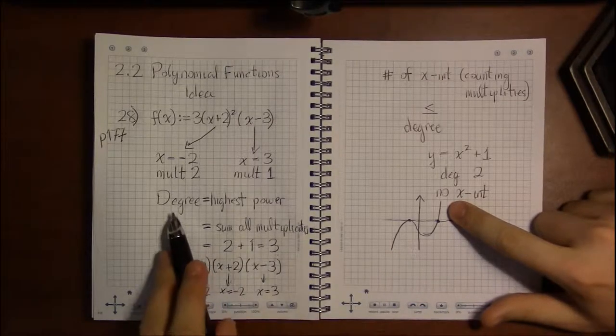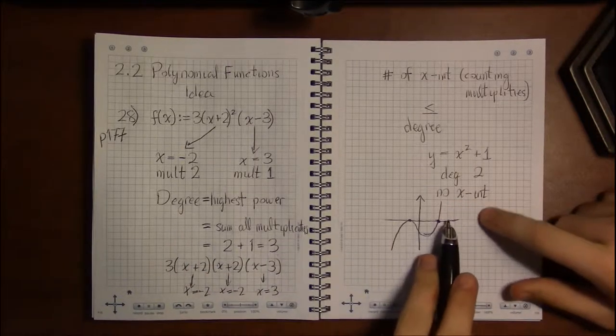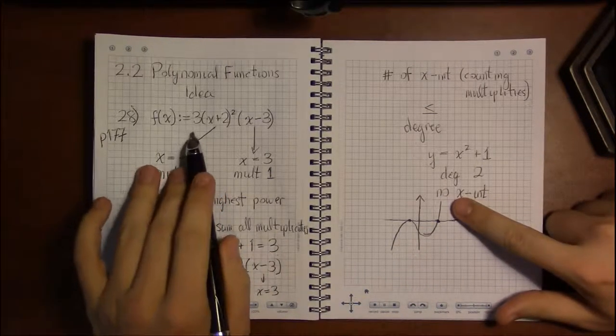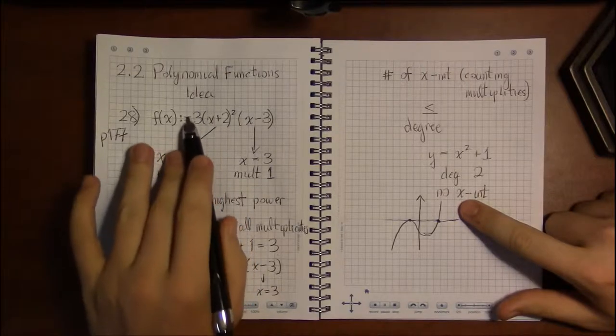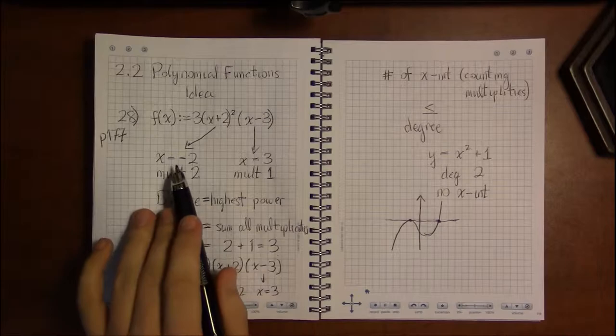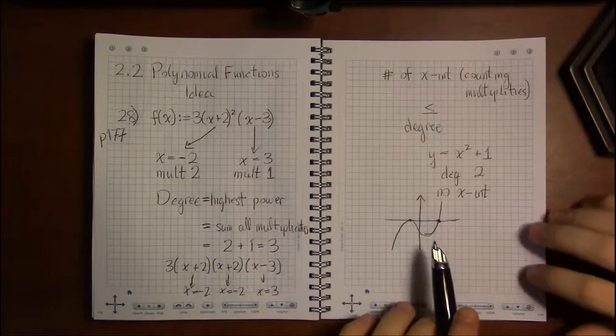This has the right behavior. The degree is odd, so one end will go up and the other end will go down. And I know it's the right end that goes up because this number out here will end up being the leading coefficient, actually. But that's another story.